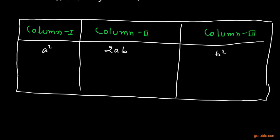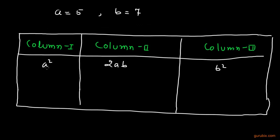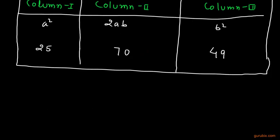A is 5, so A² equals 25. For 2AB: 5 into 7 equals 35, and 35 into 2 equals 70. For B²: 7² equals 49. Now we shall underline the unit digit of B², which is 9.